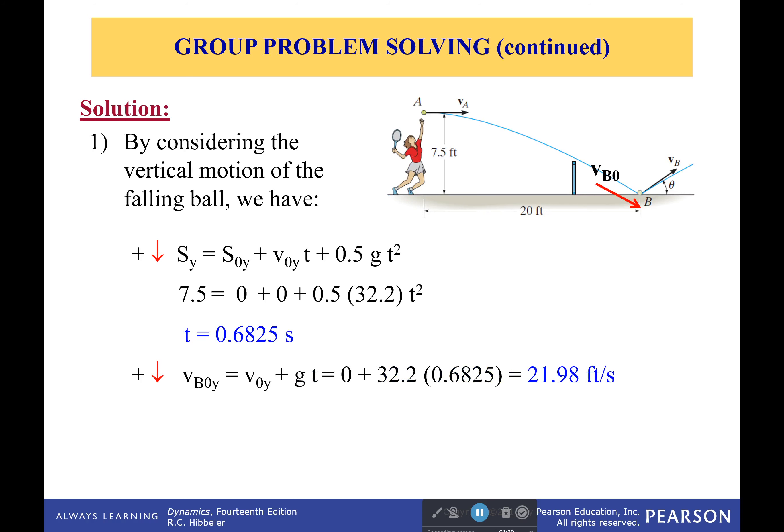We can figure out it fell 7.5 feet, so from that we can figure out the amount of time it was in the air, which would be 0.6825 seconds. The second thing we can figure out is the velocity in the y direction just as it hits the ground, just before it hits the ground. We can figure out that velocity.